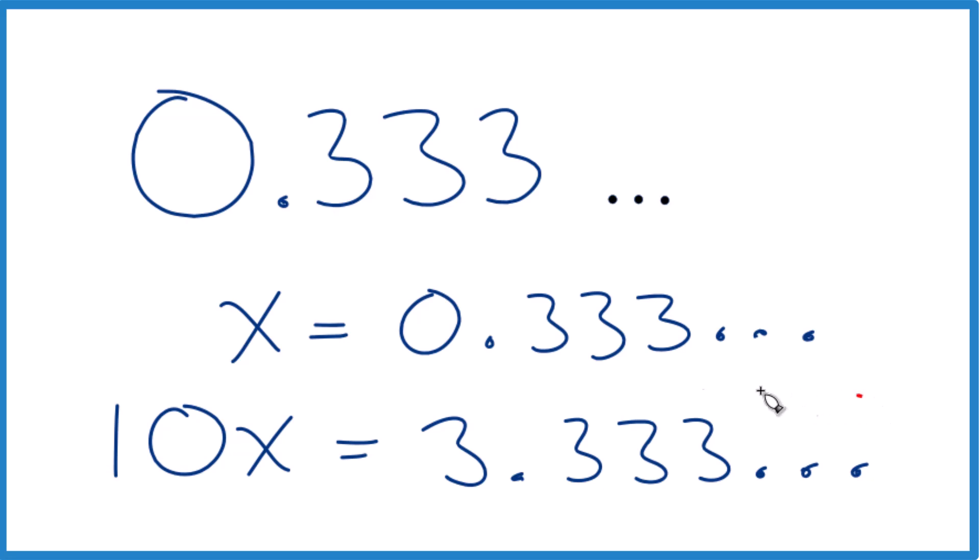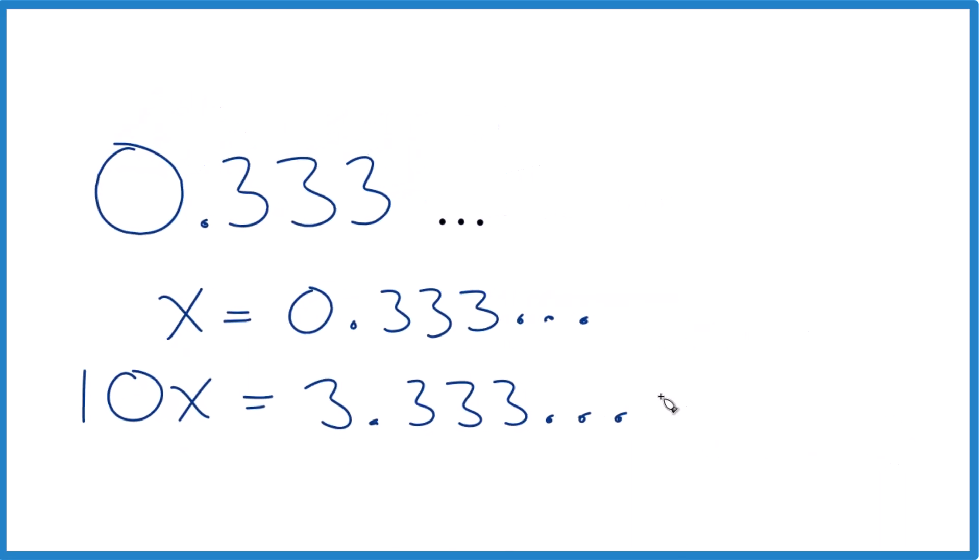What I could do, what would be nice is if I could get rid of this part of our decimal here. So if I could get rid of that 0.333 repeating, then I'd have a whole number, things would be looking good. Why don't I just subtract it? So I'm going to subtract 0.333 repeating, but I have to do it to both sides. And here's the trick.